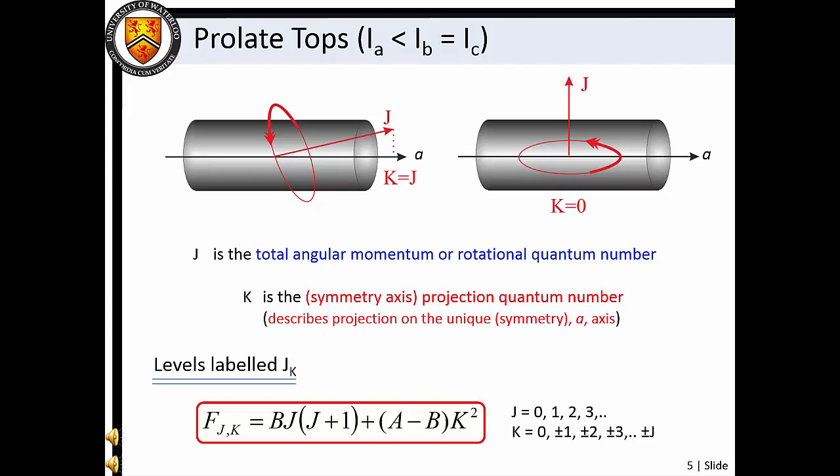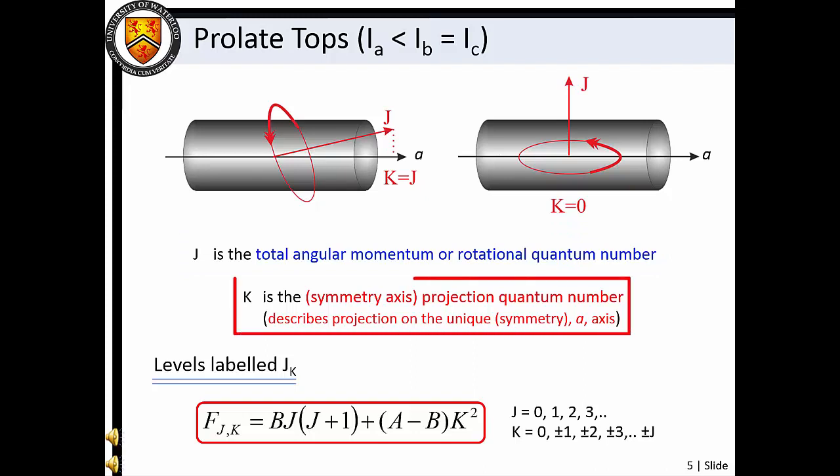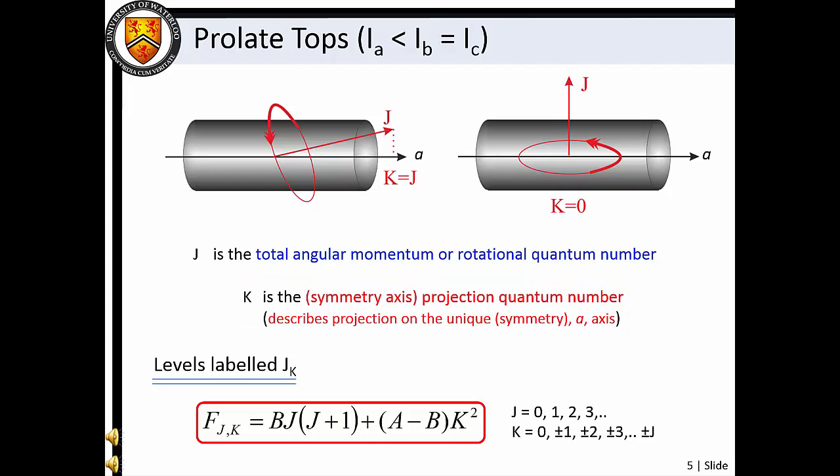Owing to the reduced overall symmetry of symmetric top species, two quantum numbers are needed to specify how a molecule is rotating. The total angular momentum quantum number J defines the overall rotation of the molecule, while the symmetry axis projection quantum number K defines the rotation about the symmetry axis. For prolate tops, K describes rotation about the A axis. If all the rotational motion of a prolate top is about the A axis, then K equals J. If none of the rotational motion is about the A axis, then K equals zero.